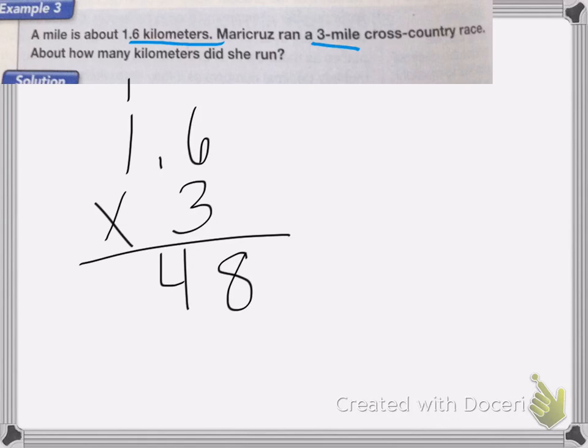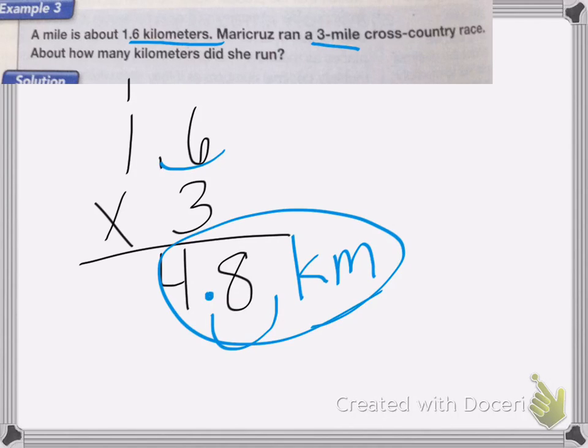Now I'm going to worry about the decimal place. So how many decimal places do I have? 1. I don't have any here by the 3. So we're going to move my decimal place over 1 and put my decimal. So she ran 4.8 kilometers. And that's my answer. Good luck on your homework.